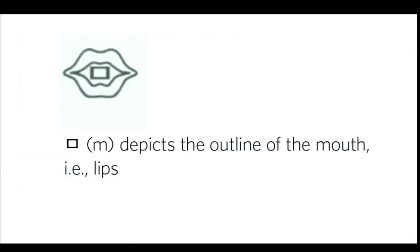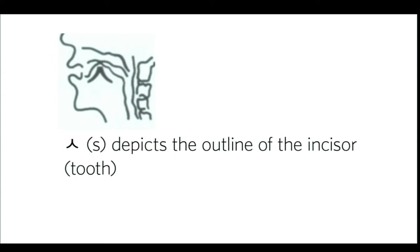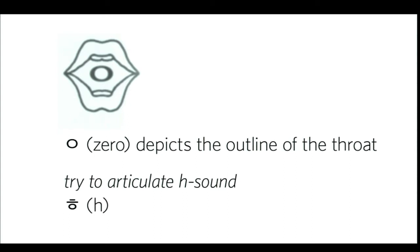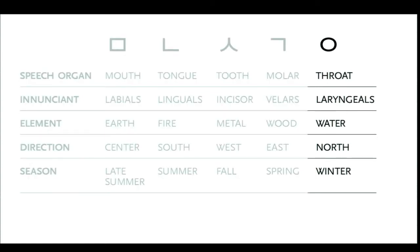The 'm' sound depicts the outline of the mouth. 'N' depicts the outline of the tongue touching the upper palate. 'S' depicts the outline of the incisor or tooth. The 'k/g' sound depicts the root of the tongue blocking the throat. And the zero terminal depicts the outline of the throat — you can try this by making an 'h' sound. The zero terminal signifies the shape of the throat, the laryngeal aperture. The throat is seen as deep and moist, analogous to water, which being fluid and transparent flows through its container. Similarly, the laryngeal sounds are produced by air passing through an unconstrained throat.